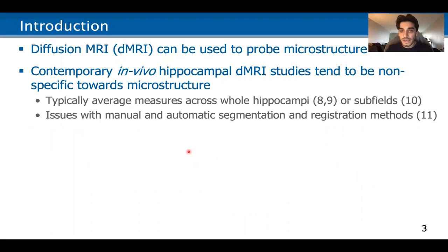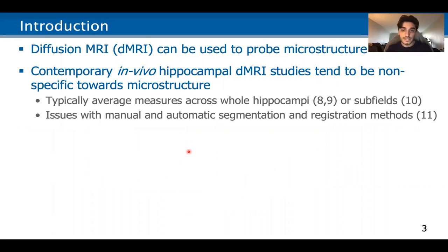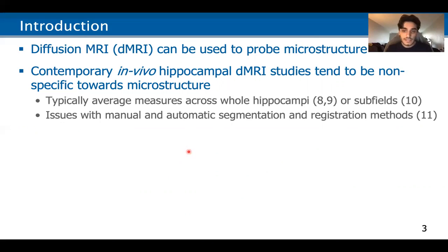Current in vivo hippocampal diffusion studies tend to be nonspecific towards microstructure. They typically average measures across whole hippocampi or subfields, which inherently averages across multiple microstructural properties. Furthermore, they suffer from issues with manual and automatic segmentation and registration methods.